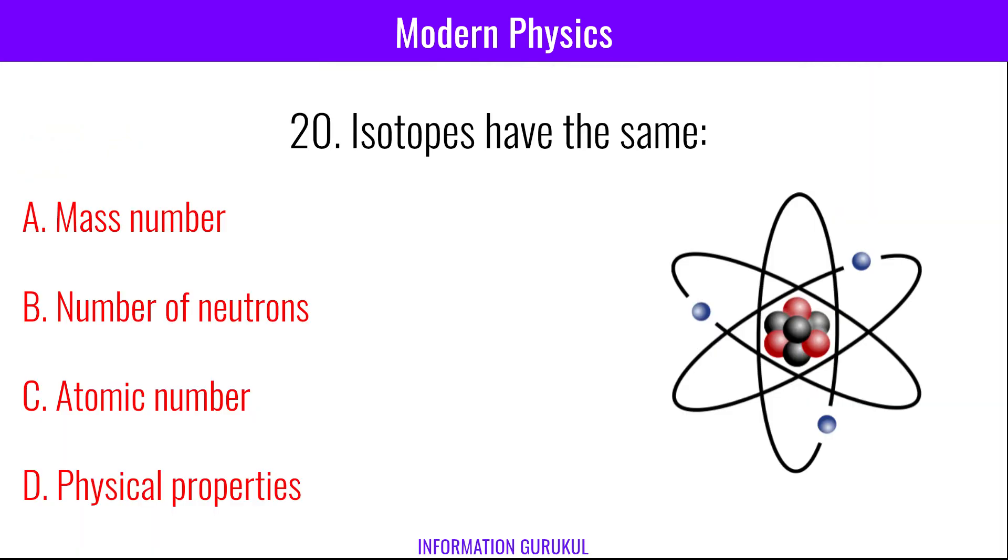Protons plus neutrons. Isotopes have the same atomic number.